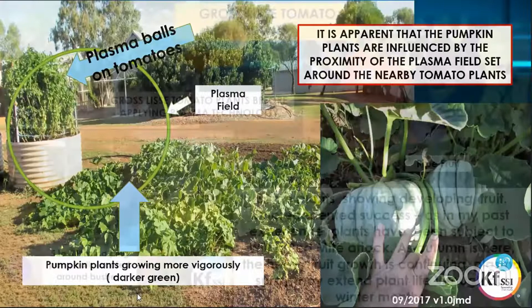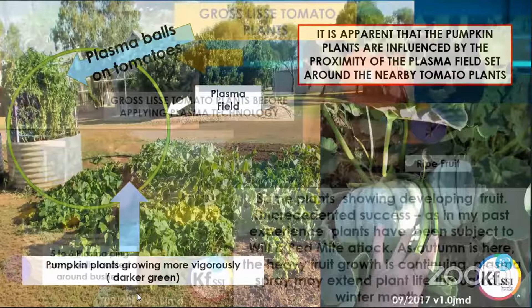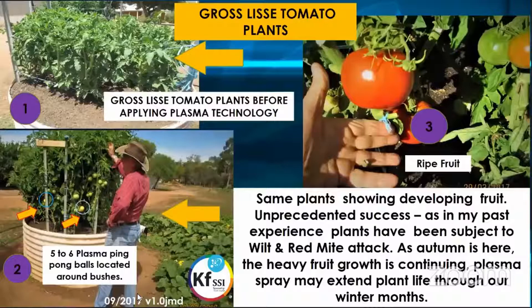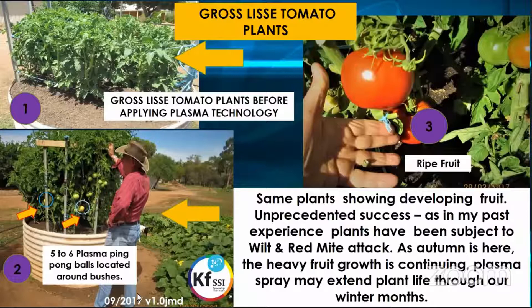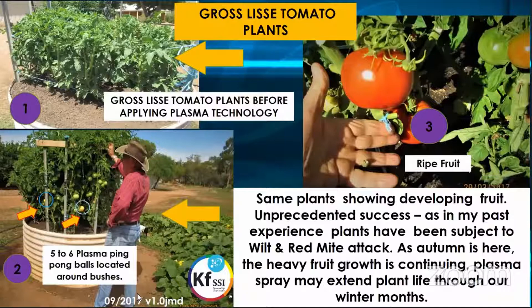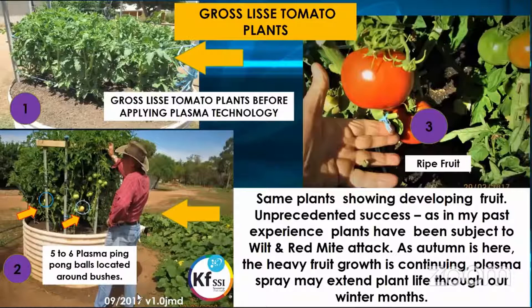The other one was a different variety — a Gross Elisa tomato plant. The photograph on the top left was before he had applied any plasma. He placed five or six ping pong balls all around and had beautiful ripe fruit. He had unprecedented success with this plant because in past experience, these plants had always been subjected to wilt and red mite attack. Generally in very dry conditions, large tomato plants don't grow well. But in autumn the heavy fruit was continuing to grow, and he was also spraying his plants with liquid plasma water.